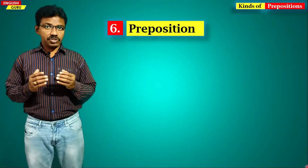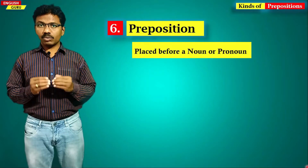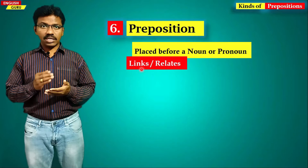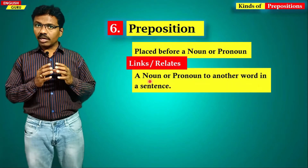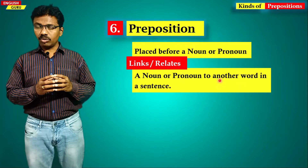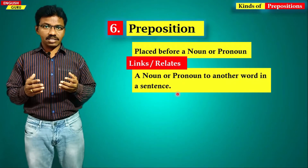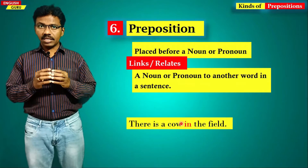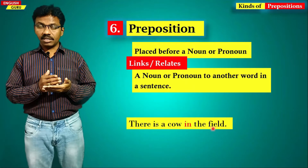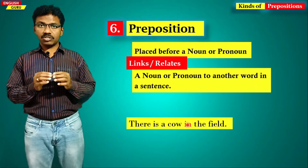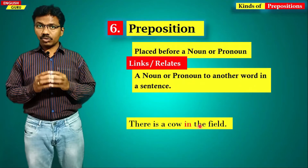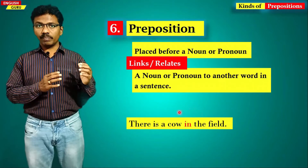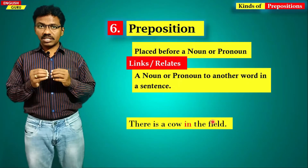So what is a preposition? A preposition is a word which is placed before a noun or a pronoun, and it links or relates that particular noun or pronoun with the other words in a sentence. For example, 'there is a cow in the field' — the word 'in' is placed before 'field', which is a noun, so it is a preposition. It is connecting or relating the field with the cow.